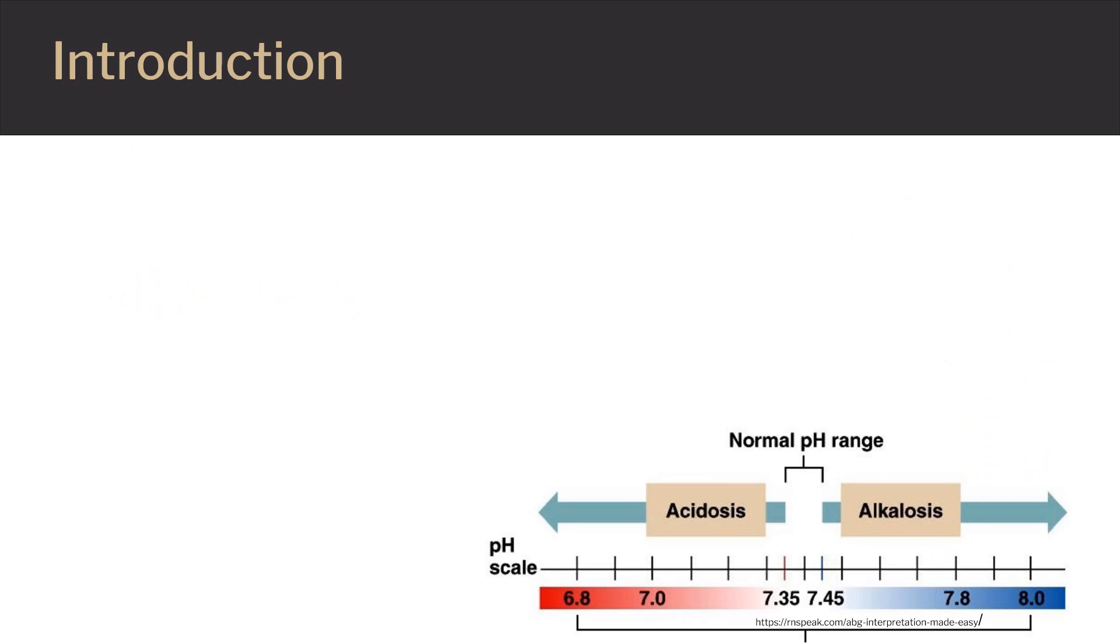Alkalosis is excessive blood alkalinity caused by an overabundance of bicarbonate in the blood or a loss of acid from the blood, called metabolic alkalosis, or by a low level of carbon dioxide in the blood that results from rapid or deep breathing, called respiratory alkalosis. People may experience irritability, muscle twitching, muscle cramps, or even muscle spasms.